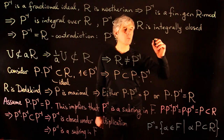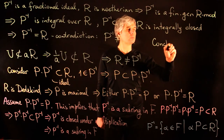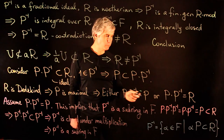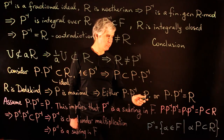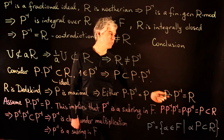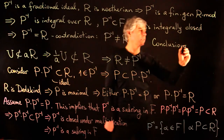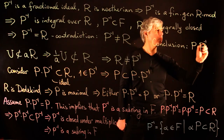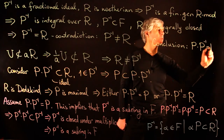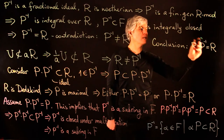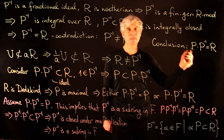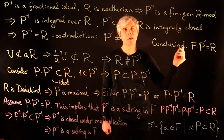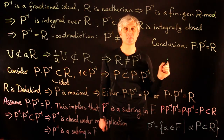So our conclusion is that of the two possibilities, the second one holds: P·P⁻¹ = R. Therefore P⁻¹ is indeed the inverse of the prime ideal P, and P is invertible.